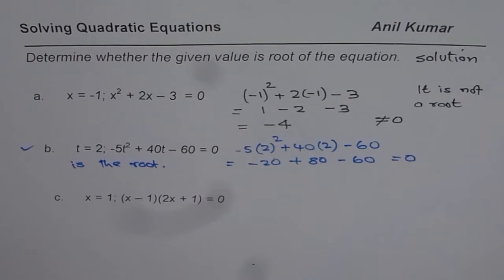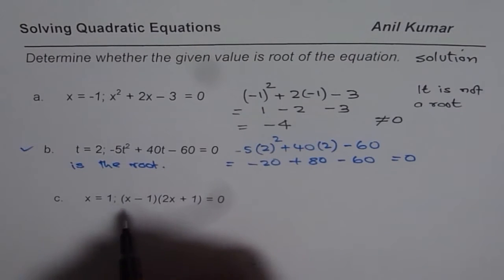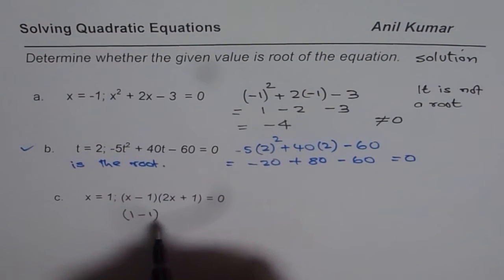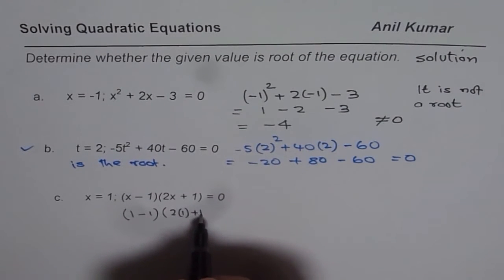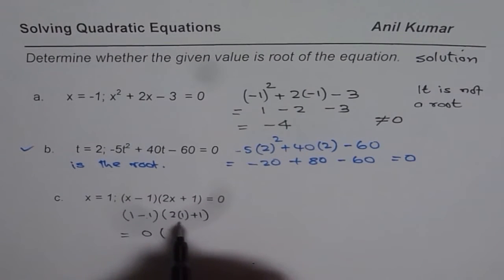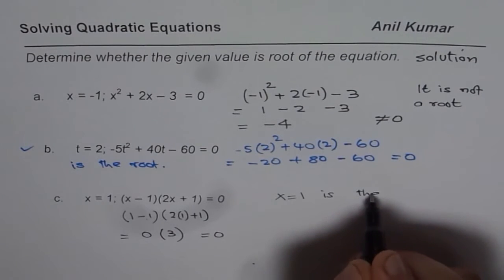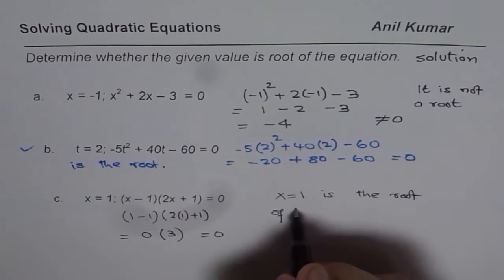Now let us do the last one here, which is x = 1 and we are given the equation in factored form. Is x = 1 a root? If I substitute 1 for x, I get (1-1)(2×1+1). Now here clearly 1 - 1 is 0. So we have 0 times 3, and this indeed equals 0. Therefore, we say x = 1 is the root of the given equation.